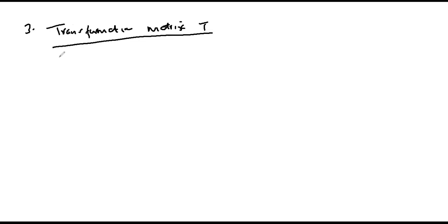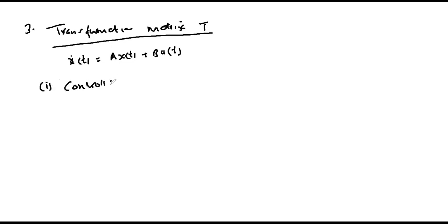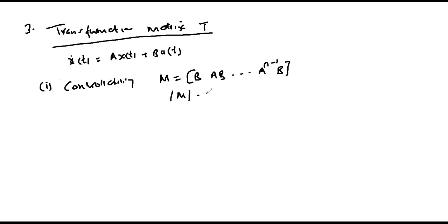Given the system defined by x-dot(t) = Ax(t) + Bu(t), the transformation matrix T method proceeds as follows. Step one: we check for controllability — we determine M = [B  AB ... Aⁿ⁻¹B] and confirm that det(M) ≠ 0.